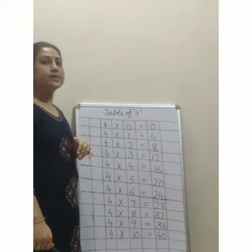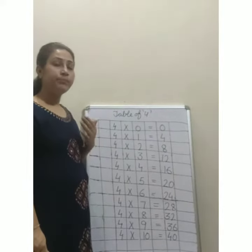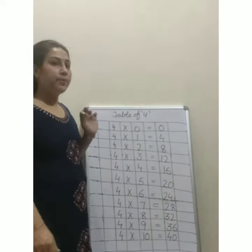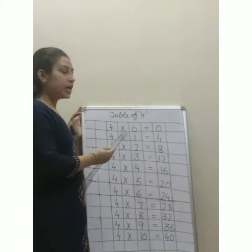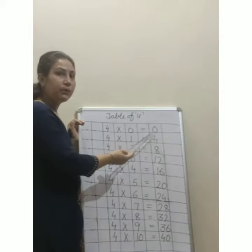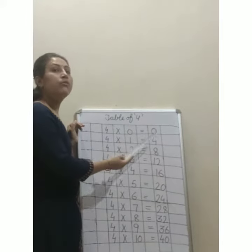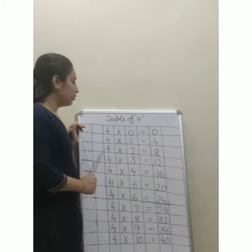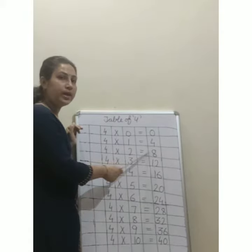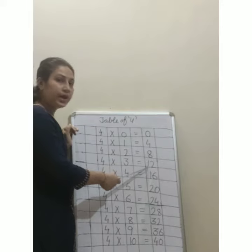Okay dear kids, now speak with me everyone. 4 zeros are 0, 4 ones are 4, 4 twos are 8, 4 threes are 12.